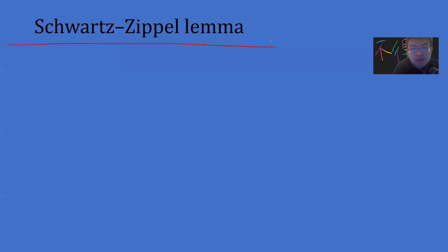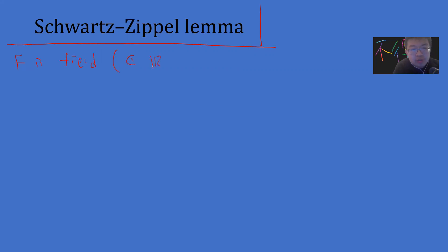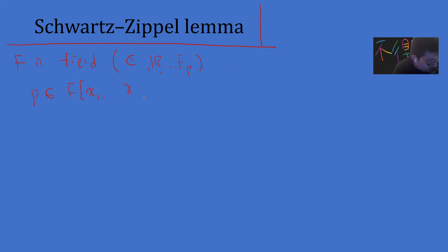Let's consider F is a field — the field can be complex, real, or a finite field. And let's consider P to be a polynomial with variable and coefficients in F, that is not the zero polynomial, with total degree d.